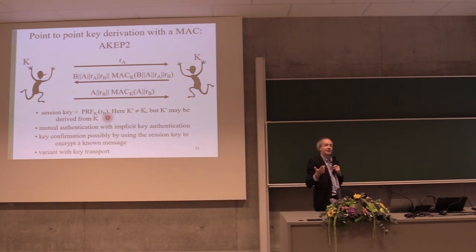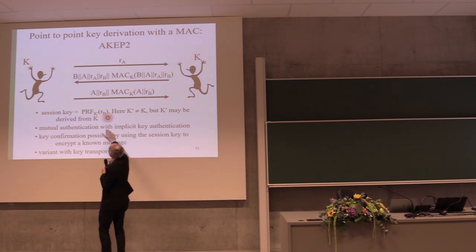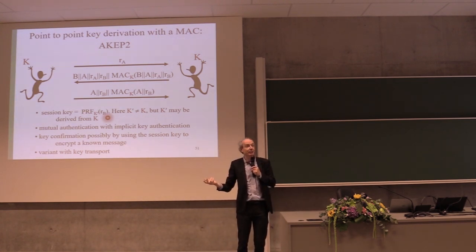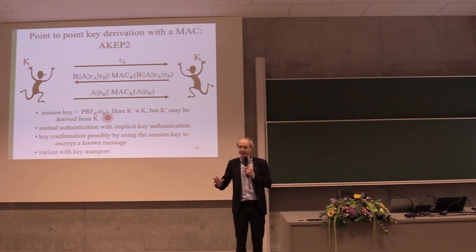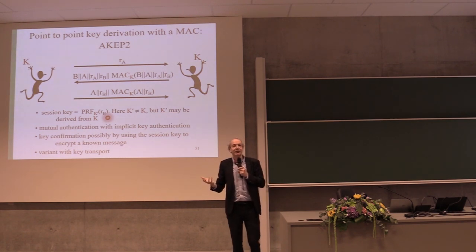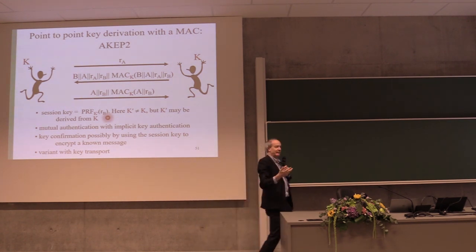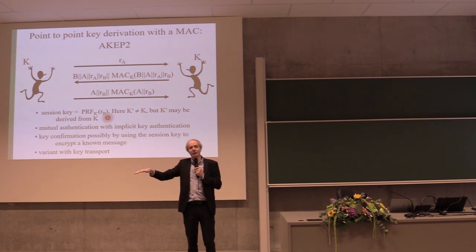Another issue: in this protocol, Alice doesn't know that Bob has obtained the key. Alice knows Bob has RB, but maybe Bob crashed during the computation. Similarly, Alice may have crashed. The parties don't know the session key has been computed. You can achieve this easily by MACing or encrypting something with the session key — but then the proof breaks down. If you actually use the key, the proof of this protocol is no longer valid. So you can prove secure exchange, but once you use the result, the proof is no longer valid.